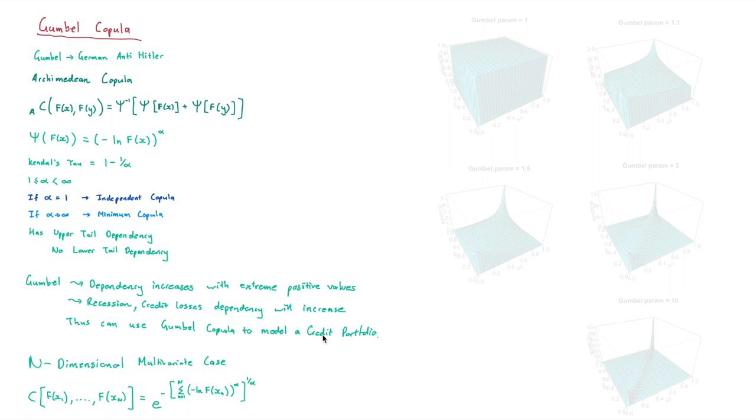Anyway, let's look at some pictures of the Gumbel Copula. So, what I'm going to be doing is I'm going to be playing with the parameter alpha, and I drew these in a statistical program known as R. So, you can see here, when we have it as 1,